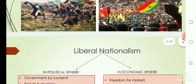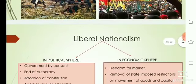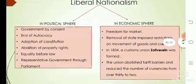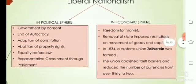Under liberal nationalism in the political sphere: government by consent, end of autocracy, adoption of constitution, abolition of property rights, equality before law, and representative governments through parliament.